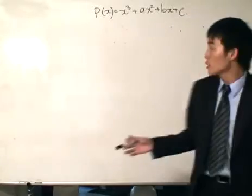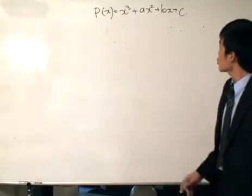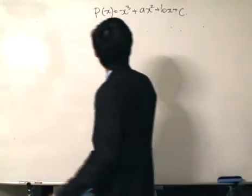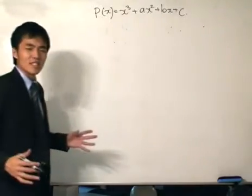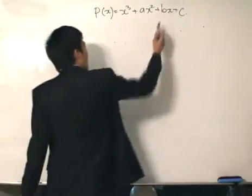We are given this polynomial of the third degree, x³ plus ax² plus bx plus c. And we are given this wealth of information, and then they want us to find the value of b.